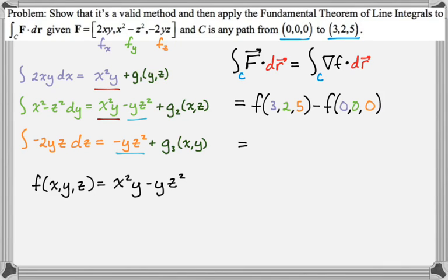Let's substitute in. We end up with f(3,2,5) = (9)(2) - (2)(25), and when you plug in 0,0,0, you just get zero. So overall, the line integral gives us negative 32.